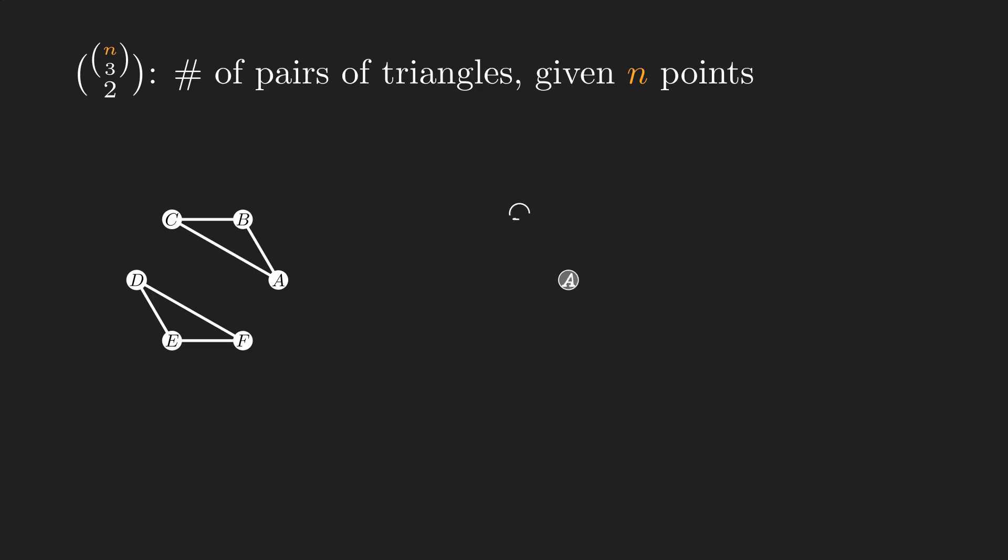We're going to do the same thing as before with n choose 3 choose 2. Three points can define a triangle so this expression can be regarded as the number of pairs of triangles given n points. Let's count the same thing based on how many points are shared between the two triangles. In case there are no shared points, we need 6 points. When one point is shared, we need 5 points to draw a pair of triangles. With 2 shared points, we need a total of 4 points.